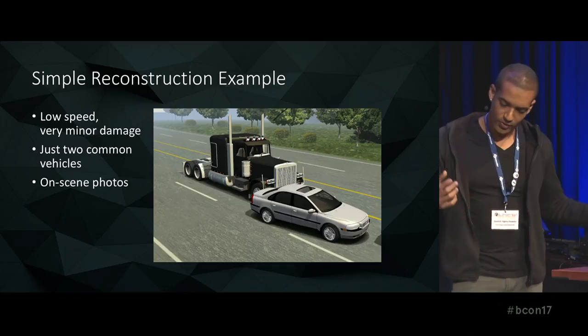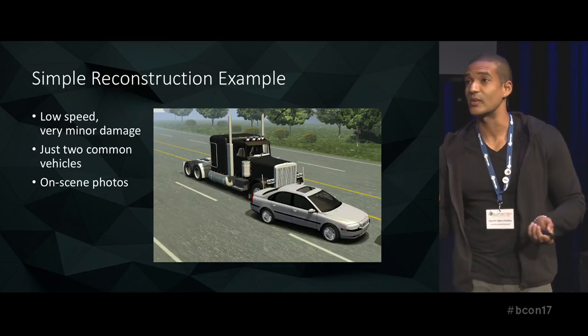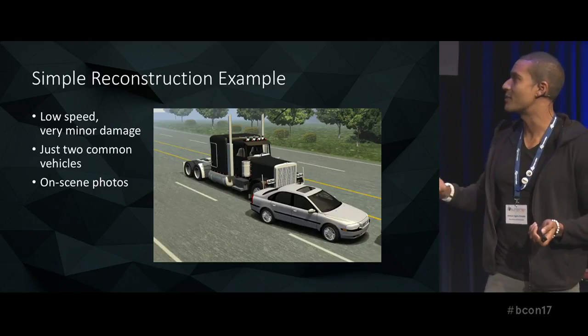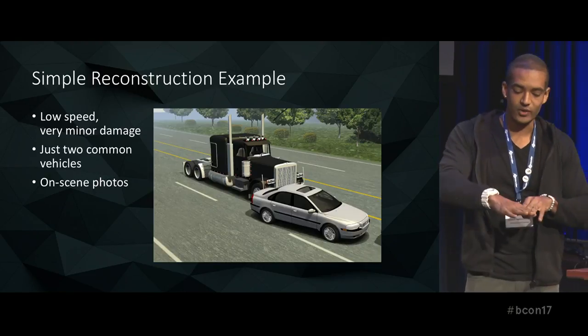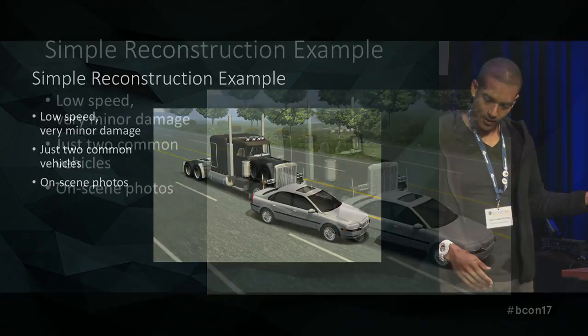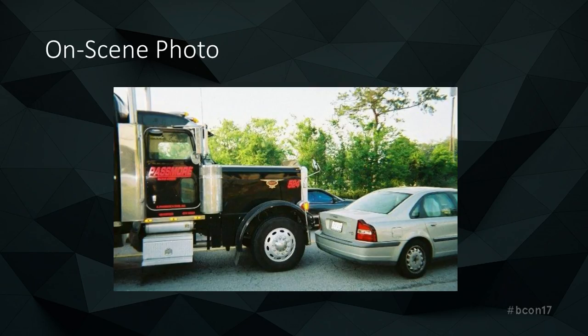Here's a simple reconstruction example. This one was fairly nice — low speed, just two common vehicles, very minor damage, and we had on-scene photos showing the final resting positions. The driver of the Volvo pulled in front of the 18-wheeler. It was just a little tap. The only damage to her vehicle was the rear left quarter panel — a scrape indicating she brushed up against the truck — and a broken tail light. Very minor damages, but she was claiming some massive injuries.